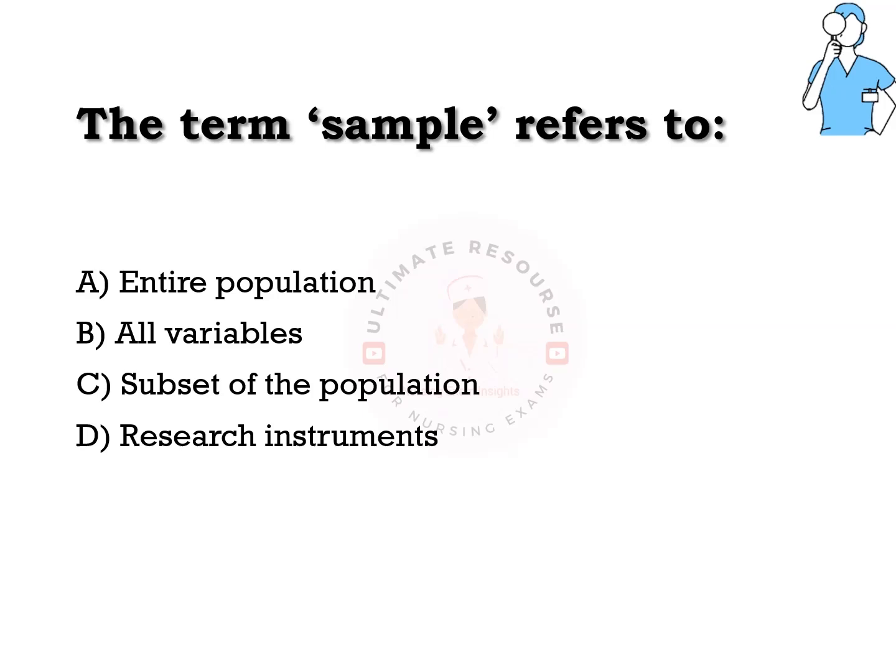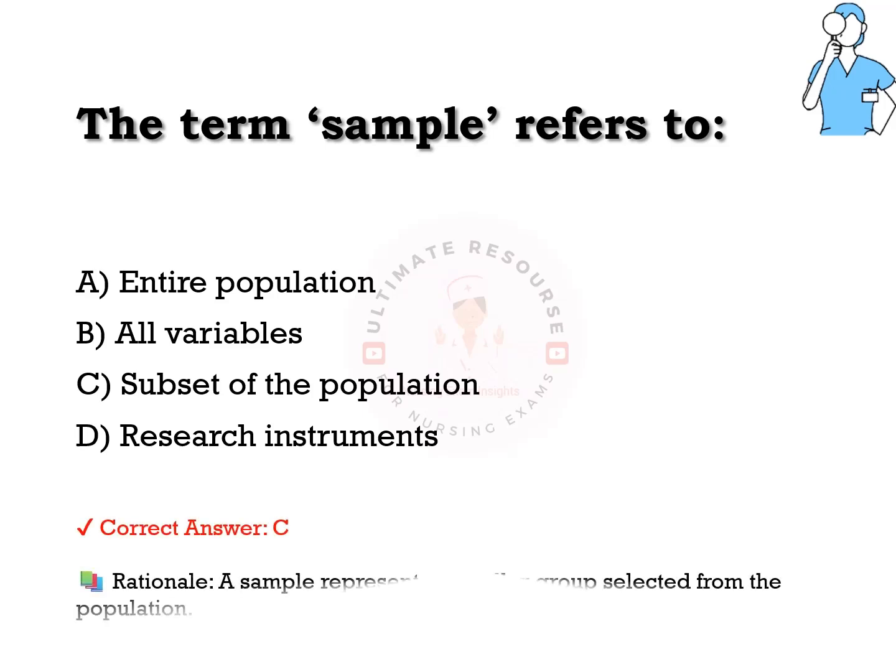The term 'sample' refers to: options are a) entire population, b) all variables, c) subset of the population, d) research instruments. The answer is c) subset of the population. A sample represents a smaller group selected from the population.